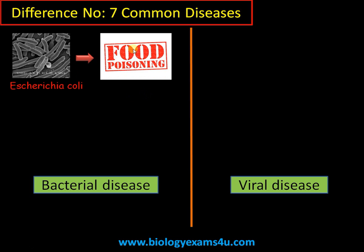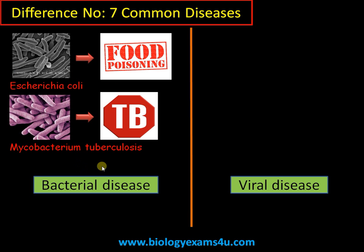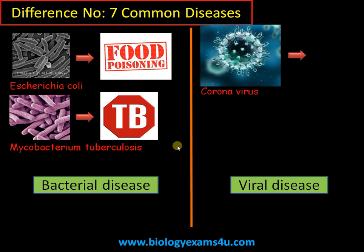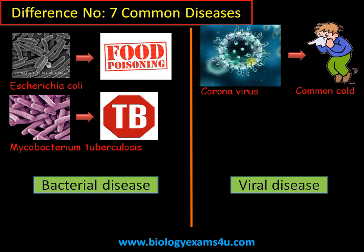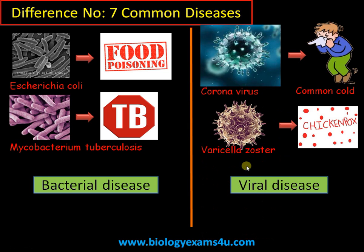Difference number seven covers common diseases. Common bacterial diseases include infections by E. coli — the most studied bacterium, which causes food poisoning and is fecal in origin — and Mycobacterium tuberculosis, which causes TB (tuberculosis). Common viral diseases include coronavirus, which causes the common cold and completes its life cycle within one or two days, and Varicella zoster virus, which causes chickenpox.